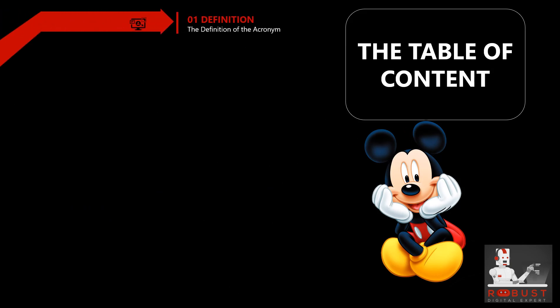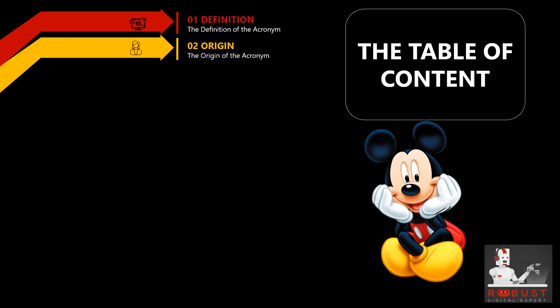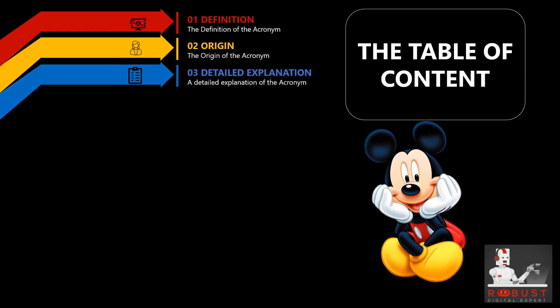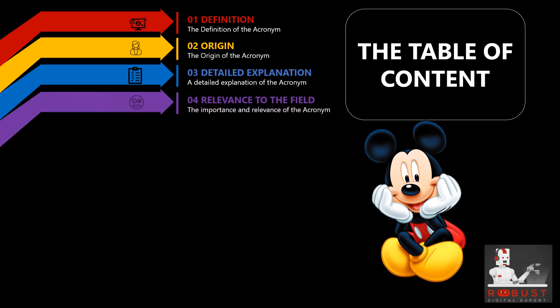The table of contents. Definition: we initiate with a precise and comprehensive definition of the acronym, emphasizing its significance within the realm of the field. Origin: we delve into the origin or source of the acronym, providing pertinent background information and historical context — this aids you in understanding the emergence of the acronym. Detailed Explanation: we unpack the acronym, meticulously breaking it down into its constituent parts, elaborating on the meaning behind each element and exploring specific terminology and associated concepts. Relevance to the Field: we explore the importance and relevance of the acronym, discussing how it addresses specific needs, resolves common challenges, or embodies key concepts within the discipline.